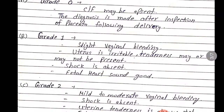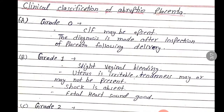Clinical classification: bleeding is used to grade the condition. Grade 0: clinical features are absent. In this condition, even if placental abruption occurs, it will not be visible through clinical features. The diagnosis is only made at the end — during delivery and placental inspection. Bleeding is absent in grade 0.